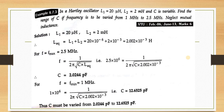Last problem for Hartley oscillator: L1 = 20 μH, L2 = 2 mH, C is variable. Find the range of C if frequency is to vary from 1 MHz to 2.5 MHz. Neglect mutual inductance. L_eq = L1+L2. At maximum frequency 2.5 MHz: C = 2.0244 pF. At minimum frequency 1 MHz: C = 12.625 pF. So C must vary from 2.0244 pF to 12.6525 pF.